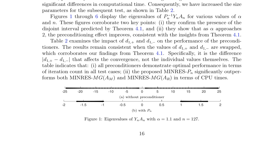Eigenvalue distributions for P_N^{-1}·A_N are presented in Figures 1 through 6, confirming the presence of a disjoint interval predicted by Theorem 4.1 and the improvement of the preconditioning effect as α approaches 2. Table 2 examines the impact of diffusion coefficients D_1^+ and D_1^- on the performance of the preconditioners, showing that the difference D_1^+ - D_1^- affects convergence, not the individual values. The results indicate that MINRES-PN outperforms MINRES-MG-AM and MINRES-MG-AR in terms of CPU times, with eigenvalue distributions demonstrating the effectiveness of preconditioner PN and improved clustering as α approaches 2.